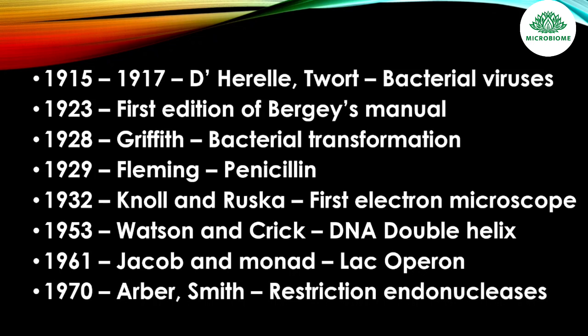In 1953 Watson and Crick described the DNA double helix. In 1961 Jacob and Monod developed the lac operon model. In 1970 Arber and Smith discovered restriction endonucleases.